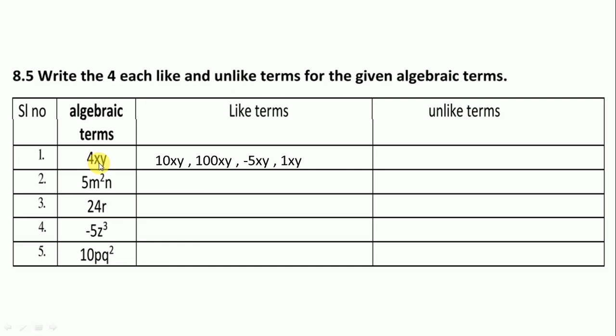In unlike terms we can change alphabet and number also, so we change both xy and number also. Here for 5m²n, we follow the same method. We just change the number 5 and keep m² and n as it is.